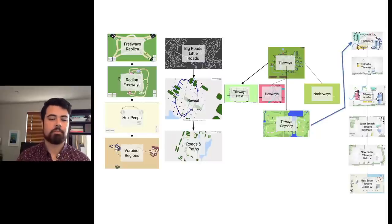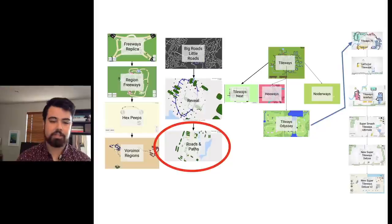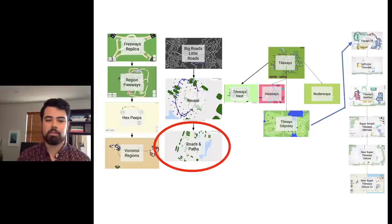Here's an overview of all of the prototypes. The first set was the regions prototypes and the freeways prototypes, then there was the open map data prototypes, and next I'm going to cover the tileways prototypes, and then that big list of iterations.